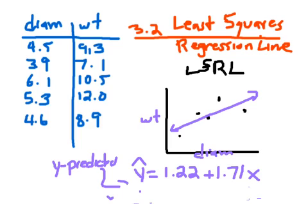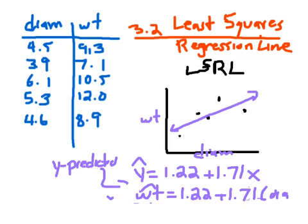The correct form is: weight-hat is equal to 1.22 plus 1.71 times diameter. Don't forget the hat, and it's better to write it with the actual variable names rather than just x and y.